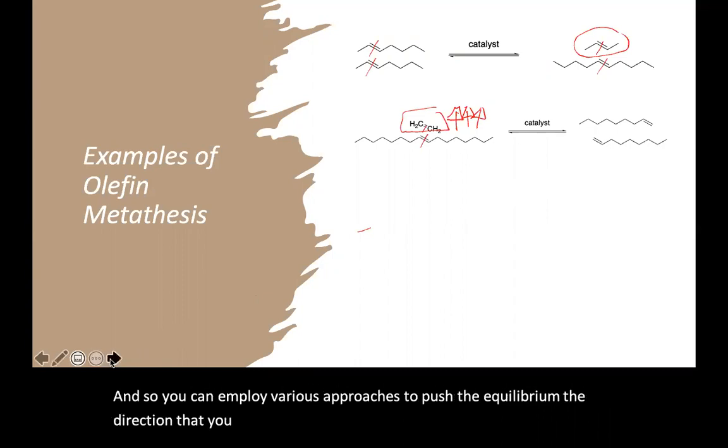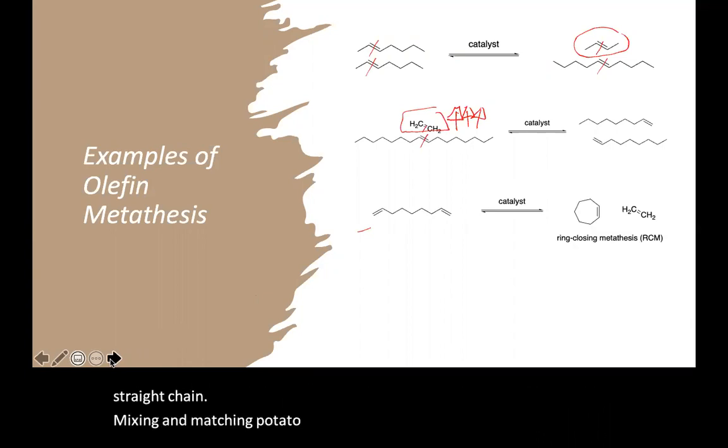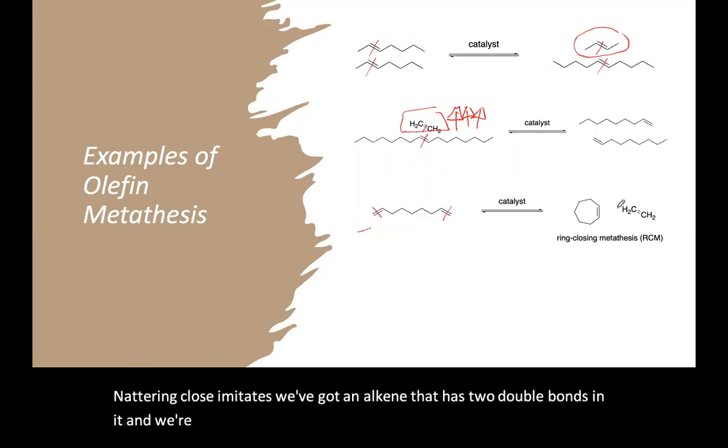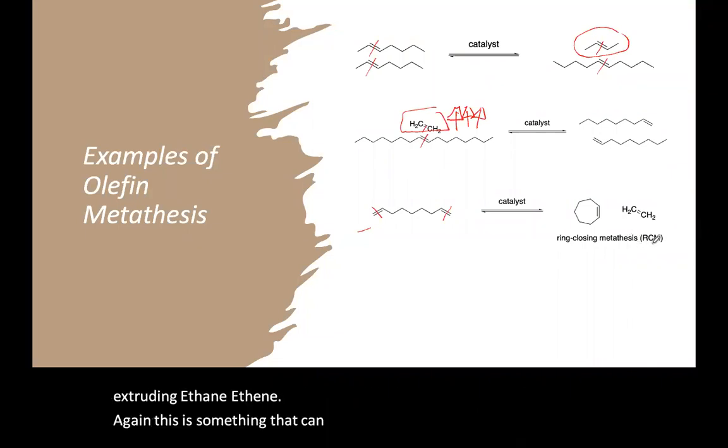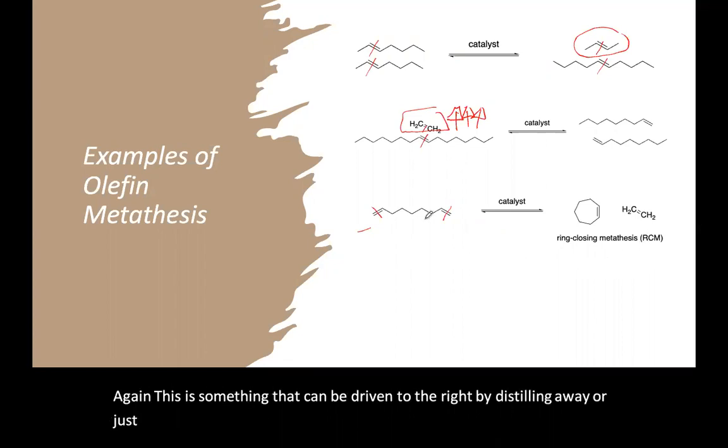Now, in addition to these sort of straight chain mixing and matching metatheses, there are other useful variations such as ring closing metathesis. And in a ring closing metathesis, we've got an alkene that has two double bonds in it, and we're just wrapping this around itself to form a new alkene and extruding ethene. Again, this is something that can be driven to the right by distilling away or just allowing that ethene to evaporate.